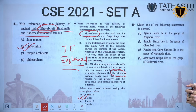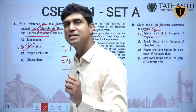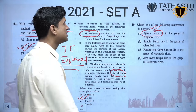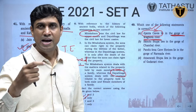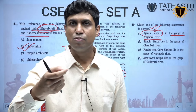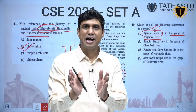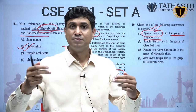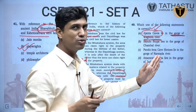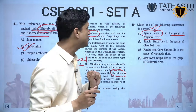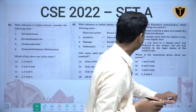Ajanta caves are making a comeback again — asked four to five times in seven to eight years. Which statement about Ajanta caves is correct? The Ajanta caves are located in the gorge of the Waghora river. UPSC is increasing the difficulty level each time — first they asked about the Padampani painting, then Buddhist themes, now the location. So when UPSC asks something, study it in depth because it can go deeper next time.